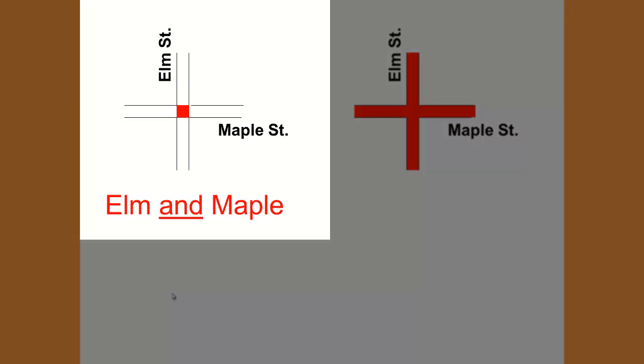Elm and Maple is here at the intersection of the two streets. It is here that I would be standing on both streets at the same time. This is called the intersection because it is like when two streets cross.